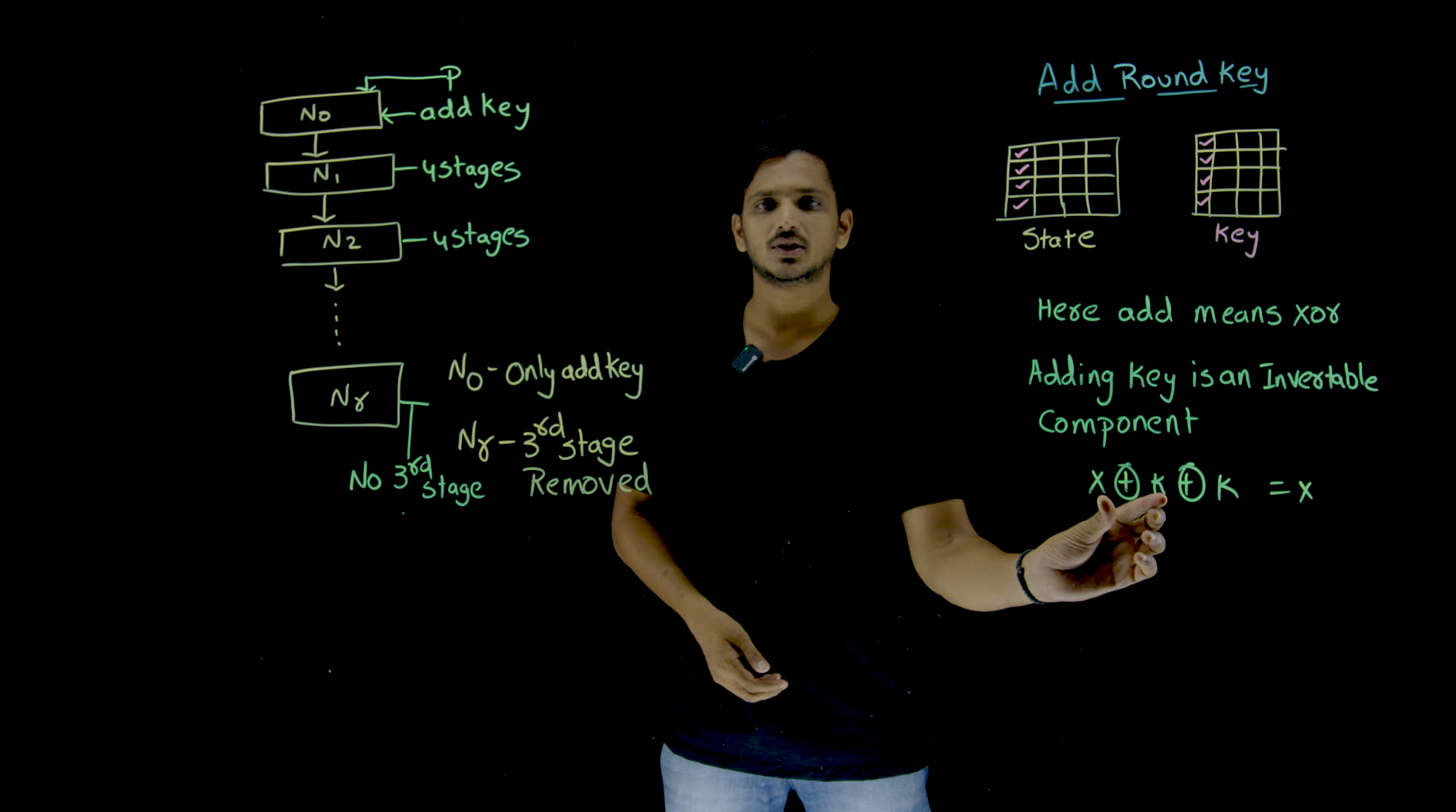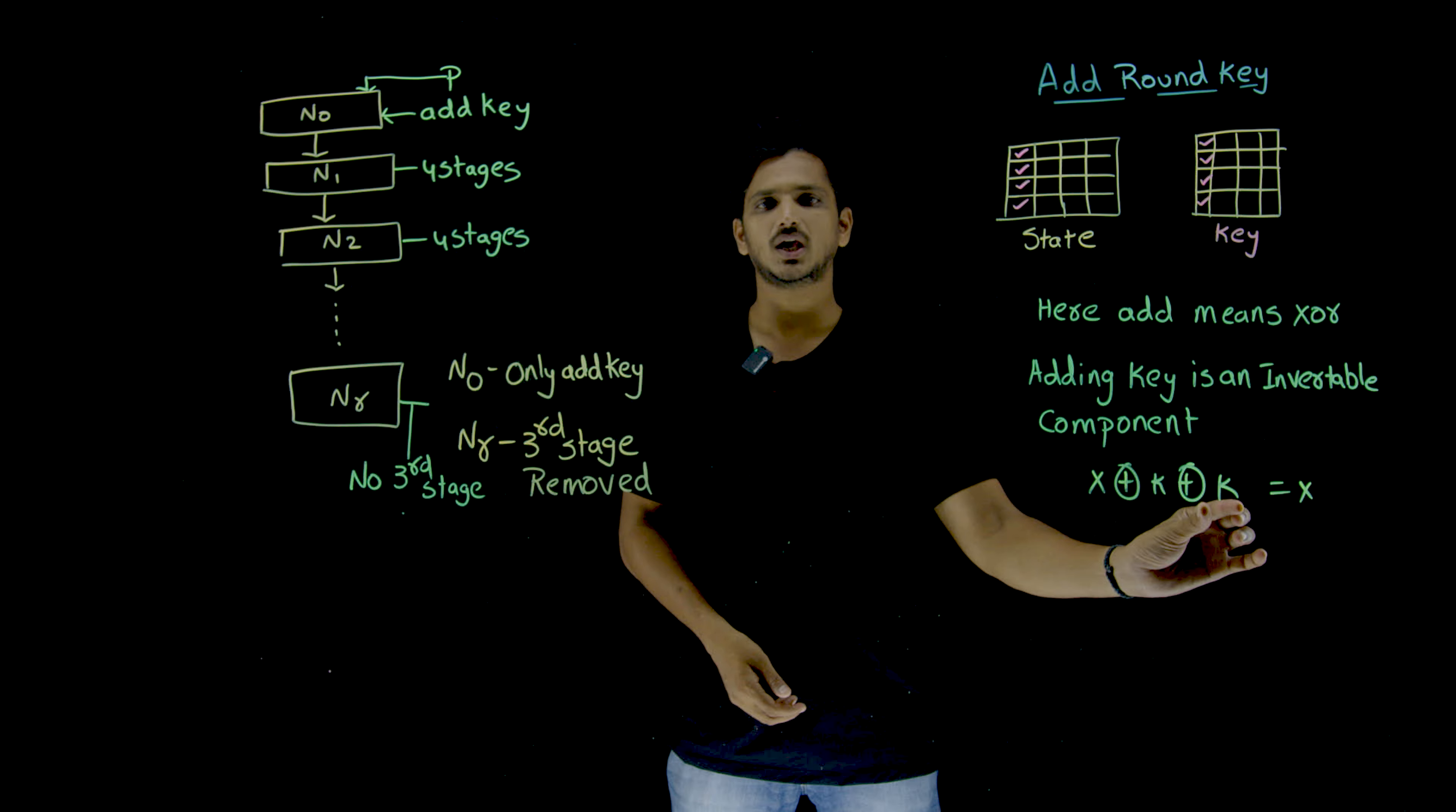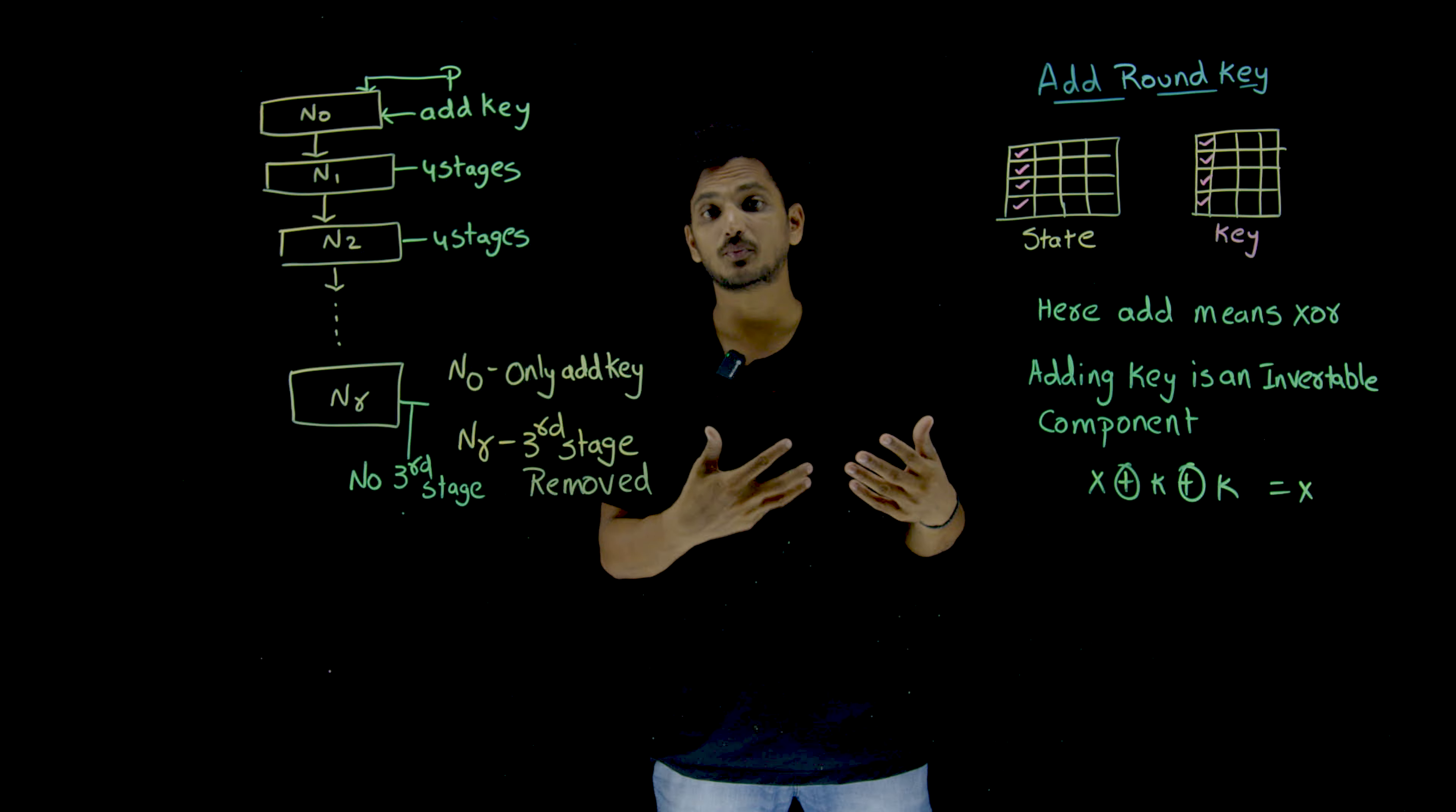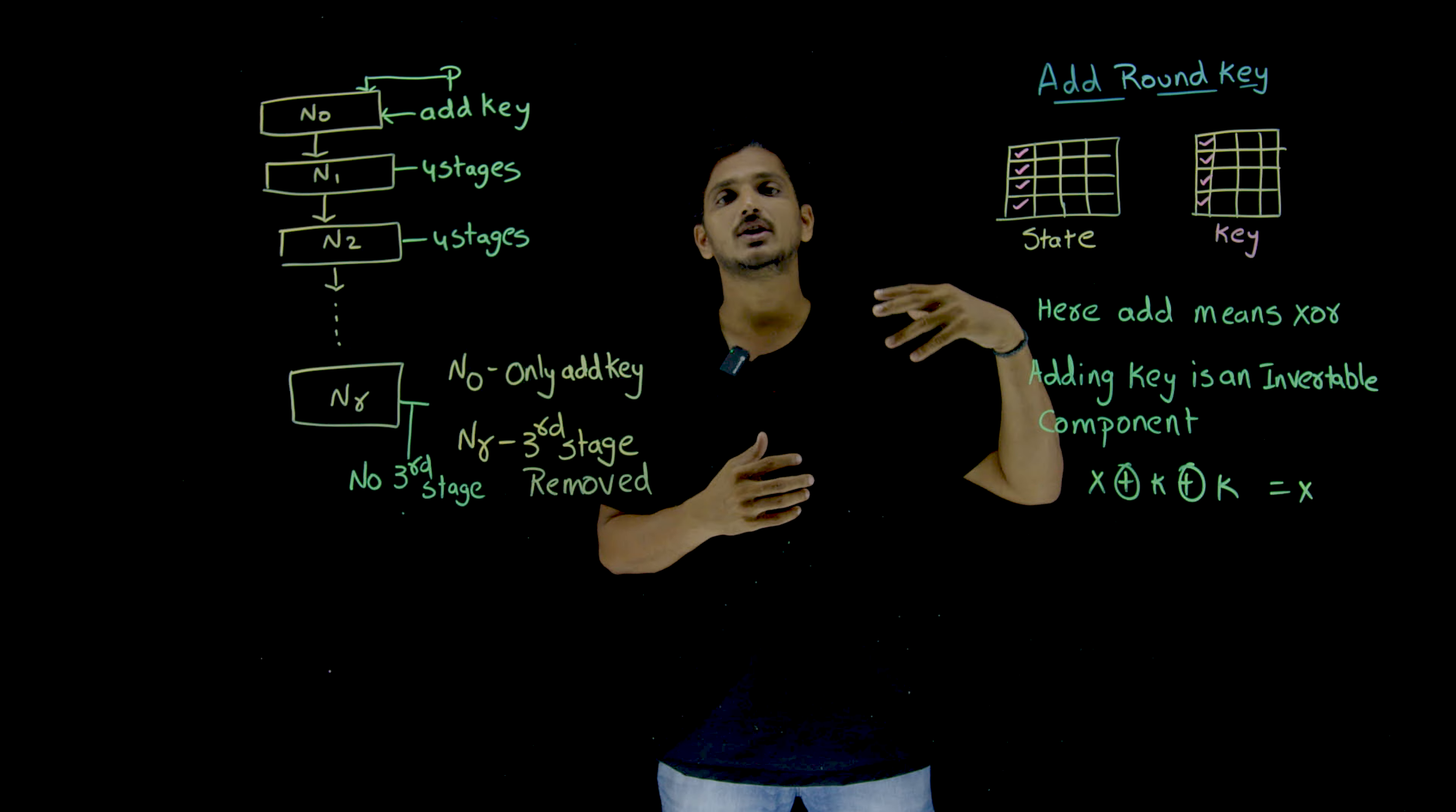See, this is what we do in the fourth stage. X XOR K. X means input. XOR with K. This is sent as input to the decryption. Again there in the decryption, this X XOR K is XOR with K. K, K get cancelled and remind with X. This is the property of XOR operation, which we already discussed in the beginning of the classes. So that's why adding key is an invertible component.